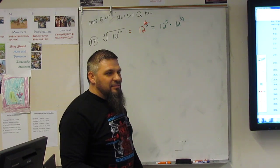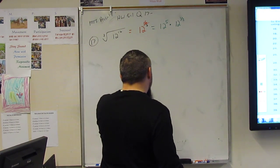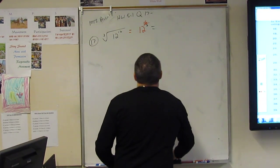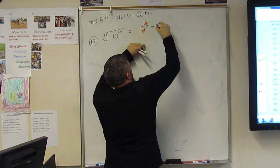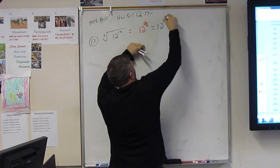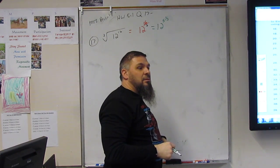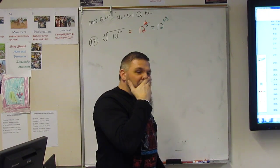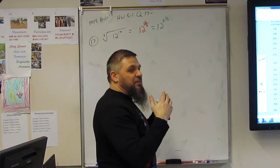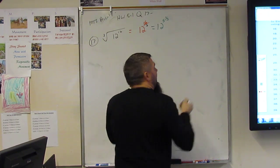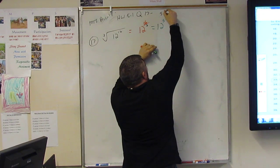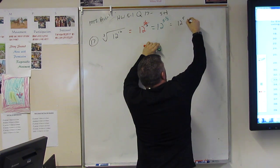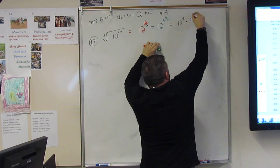Let's take a step back. Good question. So this is really 12 to the 5 and 1 3rd, right? And then what is 5 and 1 3rd? That's 5 plus 1 3rd. And when we multiply powers with the same base, we add the exponents, right? So if we add the exponents, if this is really 5 plus 1 3rd, then it's really 12 to the 5th times 12 to the 1 3rd.